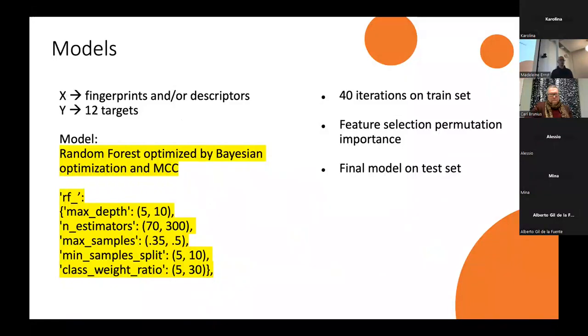The models. I have 12 of those. All of them were optimized for the hyperparameters. I use random forest. It's a bunch of decision trees in the models. And these are the parameters I sample from. I'm trying not to have overly complex models.